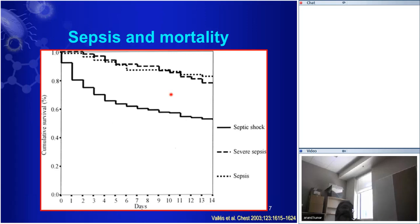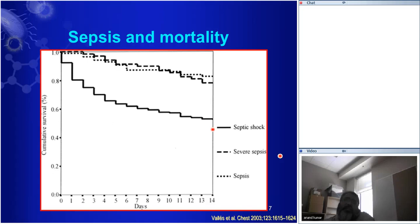The most suggestive piece of data on whether these are different diseases is simply to look at mortality. If infection, sepsis, and severe sepsis were all different diseases, you would expect increasing mortalities all the way through. But in fact, with infection in the ICU, sepsis in the ICU, or severe sepsis in the ICU, you always have about 10–15% mortality. You don't get a significant change until septic shock, when it jumps to about 40–50%.